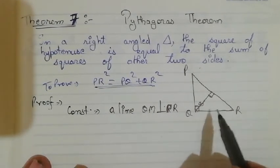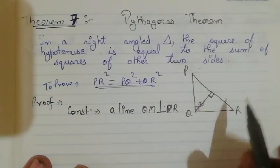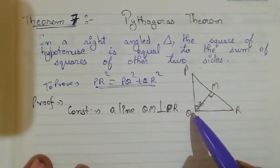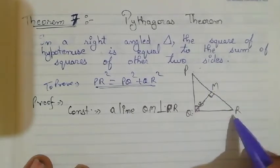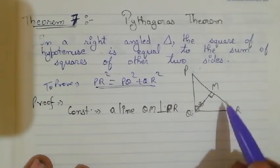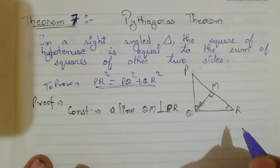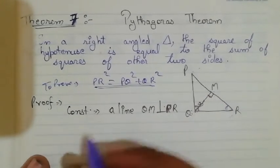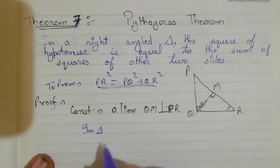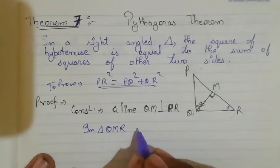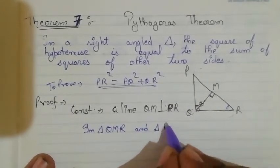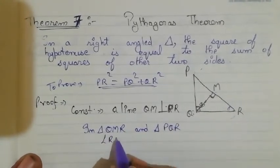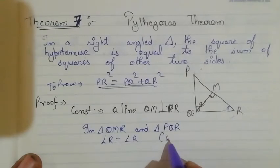This gives us point M on PR. Now look at triangle QMR and triangle PQR. In these two triangles, angle R is common.